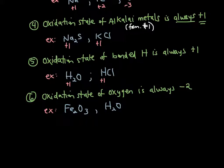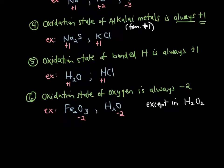Rule number six: the oxidation state of oxygen is always −2. Since we assign per atom, that −2 under O₃ means each of those three oxygens has a −2 oxidation state. The oxygen in water also has a −2 oxidation state. The only exception is in a hydrogen peroxide molecule, where oxygen has a −1 oxidation state. That is the only time that happens, so you need to remember that exception.